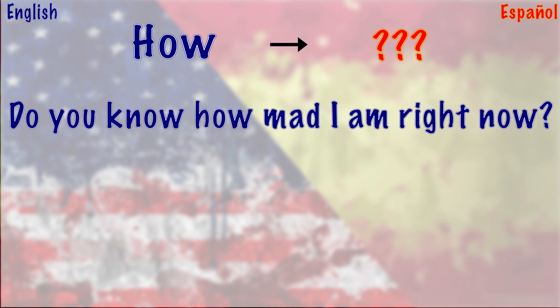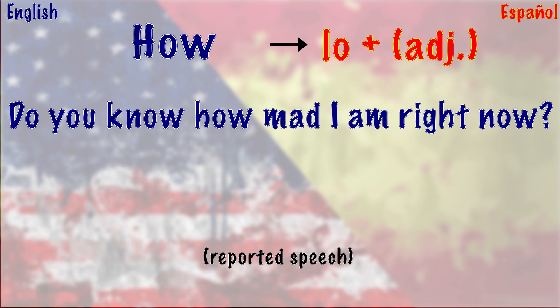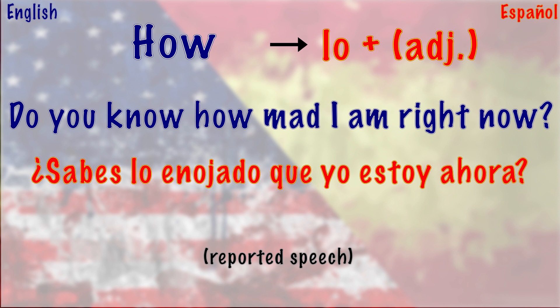Here's a bonus question: 'Do you know how mad I am right now?' Notice this is reported speech — we start with 'you' (do you know) and later mention 'I am,' with 'how' in between the two subjects. So we use the article 'lo': '¿Sabes lo enojado que yo estoy ahora?'